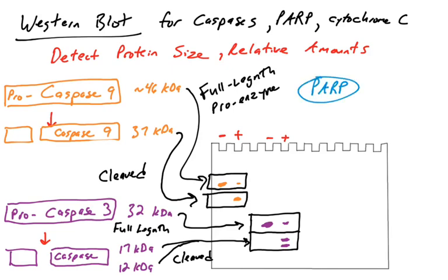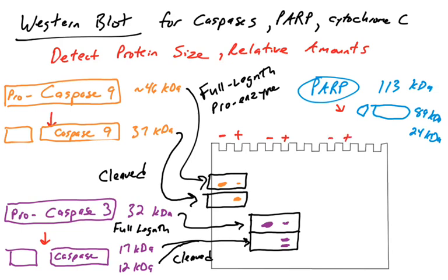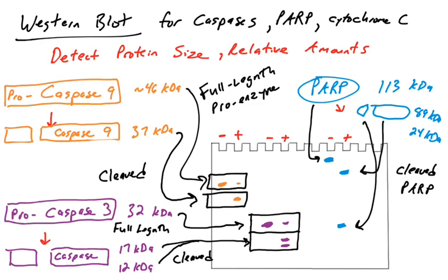Finally, we'll talk about the PARP protein, which we covered in a previous video. PARP proteins are DNA repair proteins, and they are cleaved by executioner caspases when apoptosis is occurring. The full-length PARP protein is about 113 kilodaltons. When apoptosis is occurring, executioner caspases cleave PARP from this large version into an 89 kilodalton and a 24 kilodalton version. When cells are not undergoing apoptosis, we would see only full-length PARP with none of the cleaved versions.